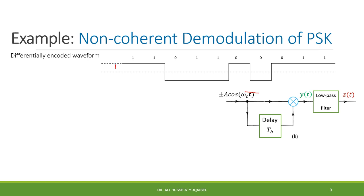So, again, ASK is non-coherent usually. PSK can be done with coherent. But with the following smart circuit, we can use non-coherent. Let's see a full example. Non-coherent demodulation of PSK. Now, I'm showing you the idea with bits. 1, 1, 0, 0, 1, 0, 0. This is the original data. What you see here, the waveform is the differentially encoded waveform.